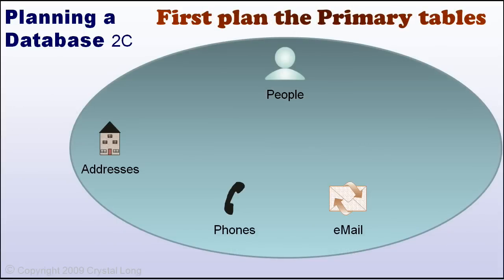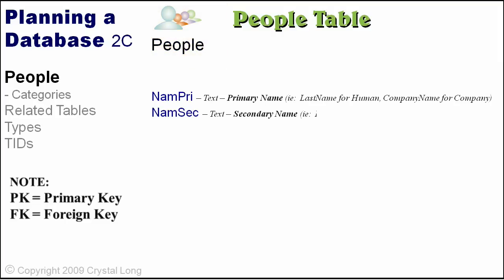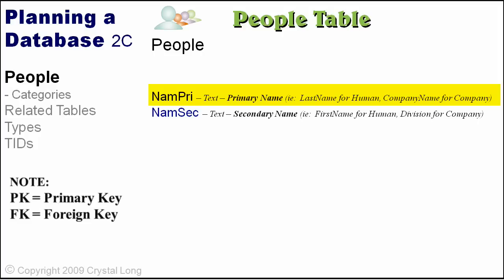Today we are going to plan the primary tables. Our people table needs to be flexible enough to accommodate humans and companies. The first thing we need is a place to keep track of the primary and secondary names. NamePry will be the last name for a human or the company name for a company. NameSec will be the first name for a human and, if applicable, the division, DBA, or subsidiary for a company.